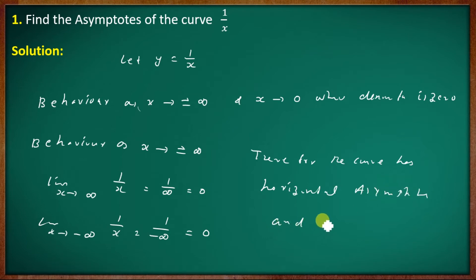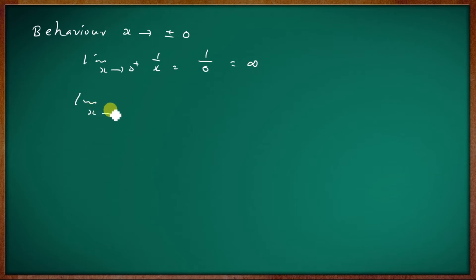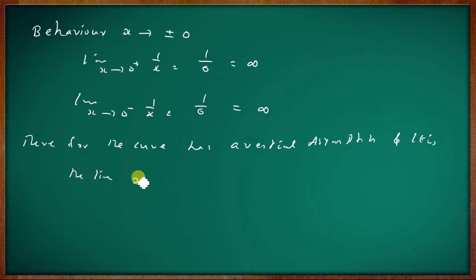The horizontal asymptote is the line y equal to 0. For the vertical asymptote, as x tends to 0: the limit as x tends to 0-plus of 1 by x equals 1 by 0, which is infinity. The limit as x tends to 0-minus of 1 by x also equals infinity. Therefore, the curve has a vertical asymptote, and it is the line x equal to 0.